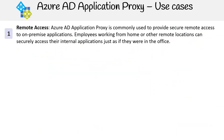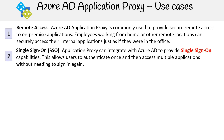Next, we'll go over some of the use cases for Azure AD Application Proxy. Remote access: Azure AD Application Proxy is commonly used to provide secure remote access to on-premises applications. Employees working from home or other remote locations can securely access their internal applications just as if they were in the office. Single sign-on: Application Proxy can integrate with Azure AD to provide single sign-on capabilities, allowing users to authenticate once and then access multiple applications without needing to sign in again.